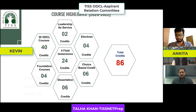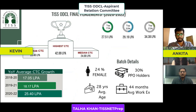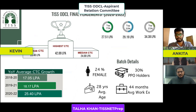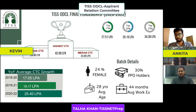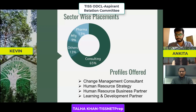Touching on placement statistics for the current senior batch: the highest CTC is around 42.09 LPA, with an average of 25.4 LPA and a median of 24 LPA. This shows great growth compared to last year's 18.17 LPA average. The average work experience in the batch is 44 months, and 30 percent of students received pre-placement offers, reflecting a very successful summer internship season.